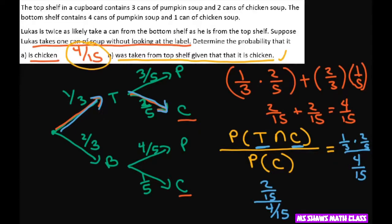And so the fifteenths cancel out, and two divided by four is one-half. So the probability it's taken from the top shelf given that it's chicken is one-half, a 50-50 chance. And that's it. Thank you, have a nice day.